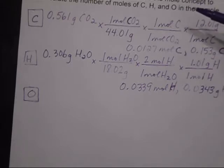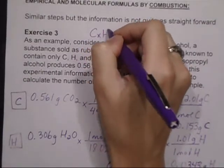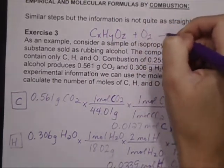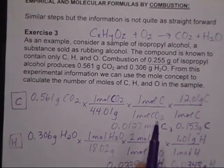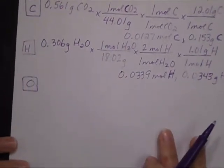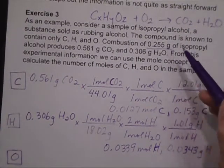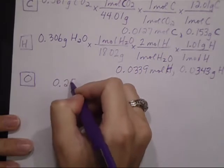Because the general equation would be CXHYOZ, we'll say that for the hydrocarbon, plus O2 yields CO2 and water. So we have oxygen coming from two places, we have to separate it. The way that we separate it is by comparing the total mass of our sample and then subtracting the mass of the carbon and the hydrogen, and then everything that's left better be the oxygen.